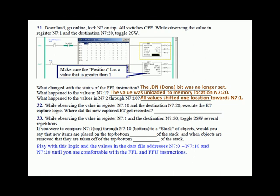While observing the value in register N7:10 and destination N7:20, execute the ET capture logic again. Where did the new captured ET get recorded? N7:10 — because first in first out means the last one will always be the last one out. You could say last in last out, but they call them FIFOs. Toggle switch two for several repetitions and observe the pattern these two instructions have on that stack of memory locations.